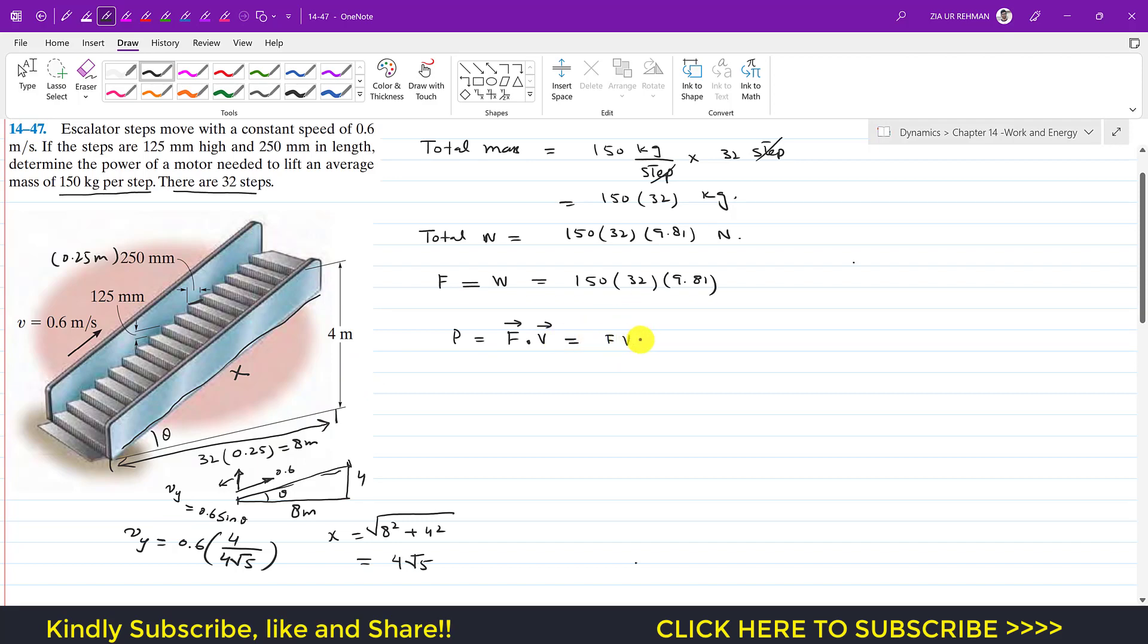Now we can write that this is F into velocity. F is equal to 150 into 32 into 9.81 multiplied by the velocity. So this is the velocity which is 0.6 into 4 divided by 4 square root 5. 4 will cancel out so we will be left with 1 divided by square root 5.